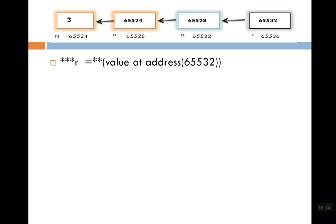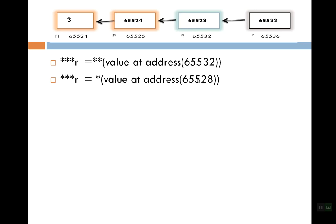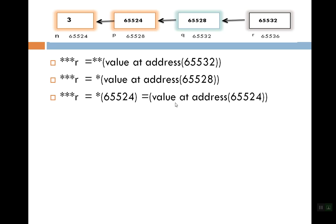This is the double pointer — if we write star star q, we access the variable n just like with single pointer p. For triple pointer r, we write star star star r. One star means value-at-address 65532, which gives 65528. The next star means value-at-address 65528, which gives 65524. The final star means value-at-address 65524, which gives 3. So with triple pointer r using three stars, we get the value of n, which is 3.